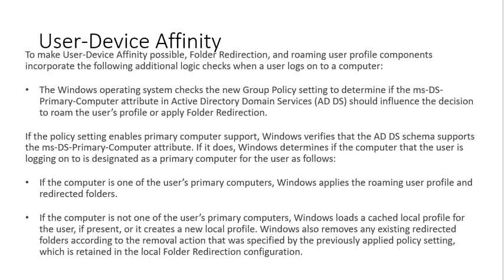If it does, Windows determines if the computer that the user is logged on to is designated as a primary computer for that user. If the computer is one of the user's primary computers, Windows applies the roaming user profile and redirected folders. If not, Windows loads a cached local profile for the user if present, or creates a new local profile, and removes any existing redirected folders according to the removal action specified by the previously applied policy setting, which is retained in the local folder redirection configuration.